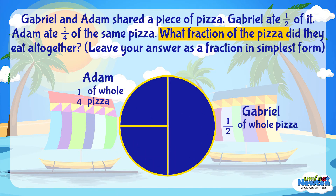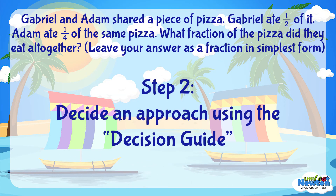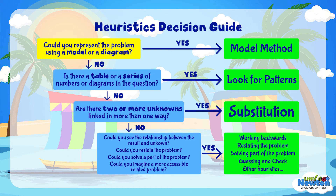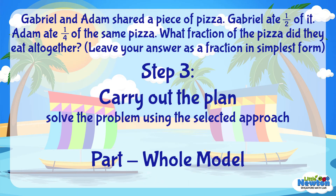What fraction of the pizza did they eat altogether? Leave your answer as a fraction in simplest form. The question asks us to find the fraction of pizza that Gabrielle and Adem ate altogether, and to leave the answer in simplest form. Now that we've understood the question, let's move on to solve this word problem. Step 2: decide an approach using our Heuristics Decision Guide. Could you represent the problem using a model or a diagram? If yes, use the model method. Step 3: carry out the plan — solve the problem using our selected approach, the part-to-whole model.